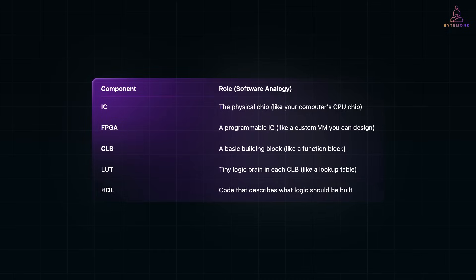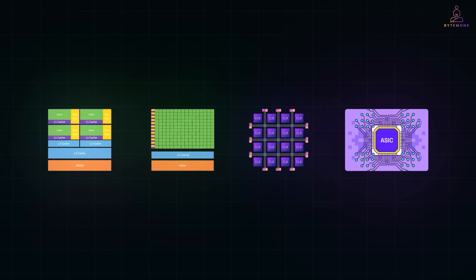Now that you understand how HDL code configures the logic inside an FPGA, let's zoom out and see where exactly FPGA fits in the broader computing world. Think of the hardware landscape like a spectrum: CPU, GPU, FPGA and ASIC — each offering different trade-offs between flexibility and performance.